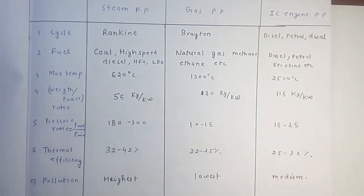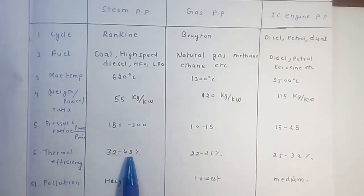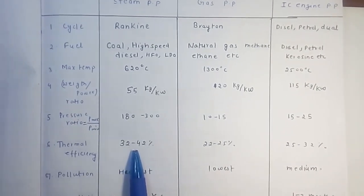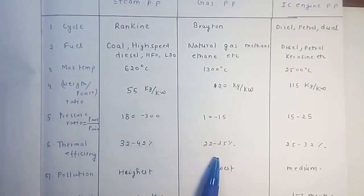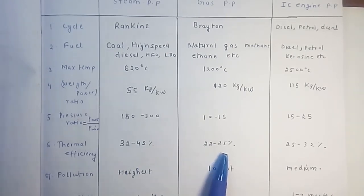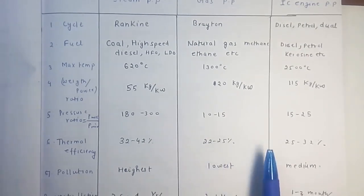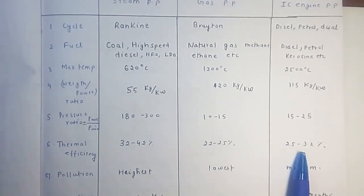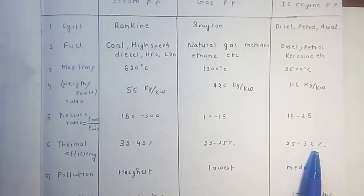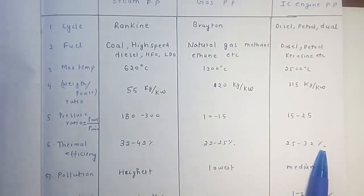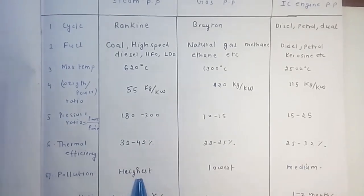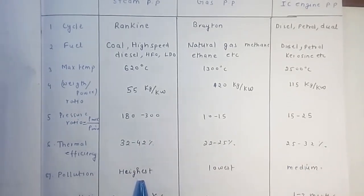Thermal efficiency: steam power plant has about 34%, gas power plant has the lowest efficiency at 22 to 25%, and IC engine power plant has 25 to 32%. Regarding pollution, the steam power plant produces the highest pollution.